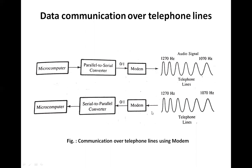The modems available at the present time are able to transfer data at a rate of 300 to 2400 bits per second. A computer can exchange information over telephone lines using two modems — one at the sending side and one at the receiver side.